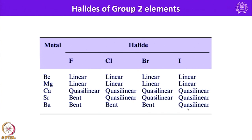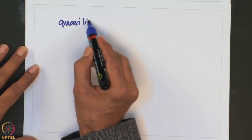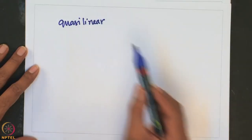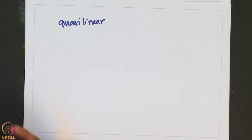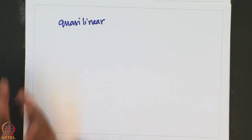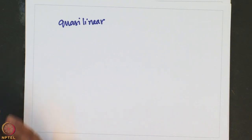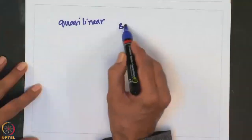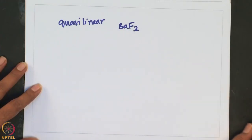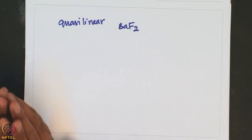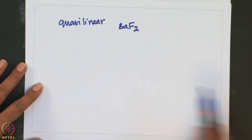The term quasi-linear refers to a species for which the calculated energy difference between linear and bent structure is less than 4 kJ/mol. The most bent of the dihalides is barium fluoride, which has a bond angle in the range of 110 to 126 degrees.